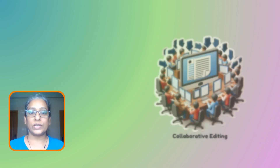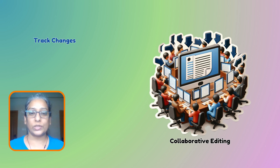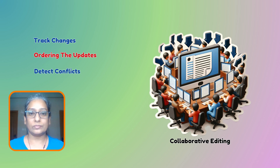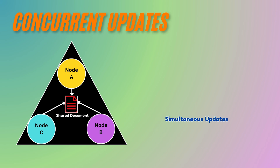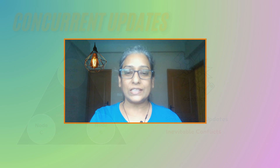Imagine you're working on a shared document with multiple people all editing simultaneously. How does the system decide which changes to keep and in what order? In distributed systems, this scenario is quite common — whether it is a document or a database, when multiple nodes or users make updates at the same time, conflicts are inevitable. Let's find out how vector clocks help.